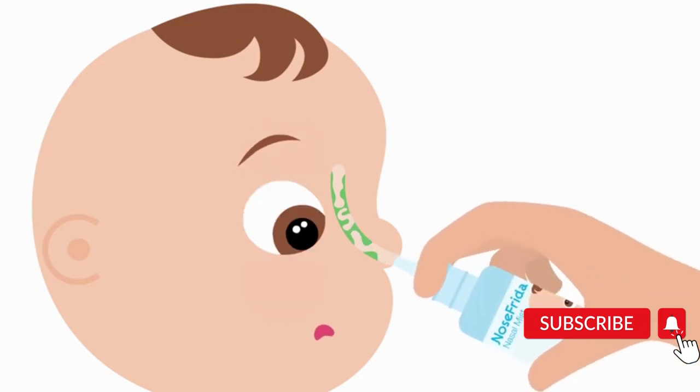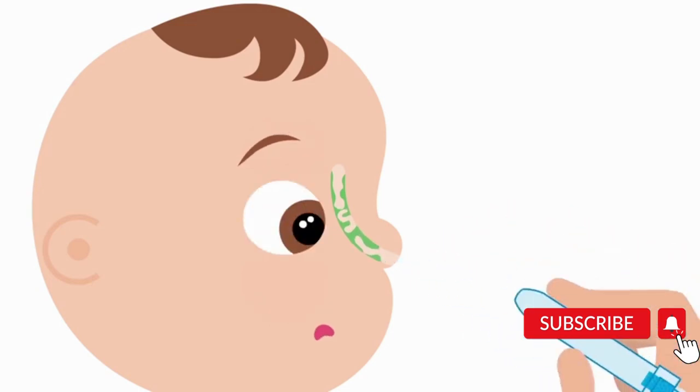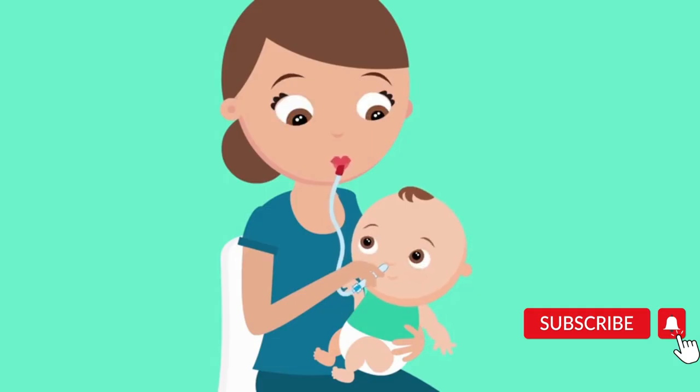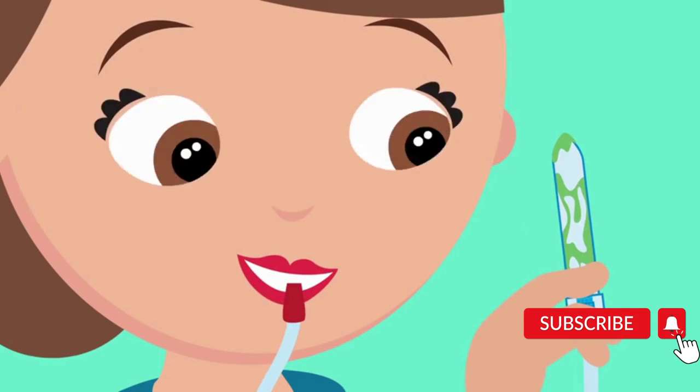First, soften those stubborn boogies with a natural saline mist. Then, simply place the tube to form a seal with the outside of baby's nose and suck away the snot. The sight of success is divine.